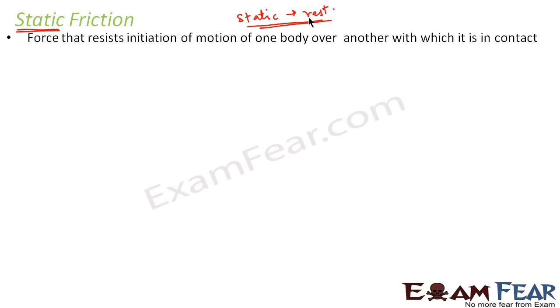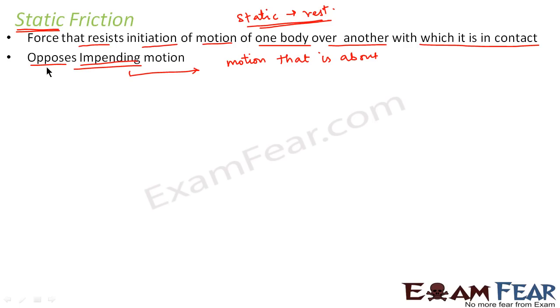Now what do you think should be static friction? The name static — what does it indicate? Static means something which is at rest. So static friction is the force of friction that resists the initiation of motion of one body over another with which it is in contact. Static friction comes into play when the body is at rest; it resists the start of motion and opposes impending motion — a motion that is about to start. Static friction is generally denoted by Fs, where the subscript s stands for static.